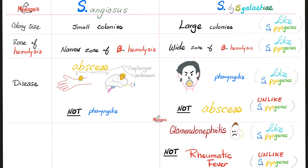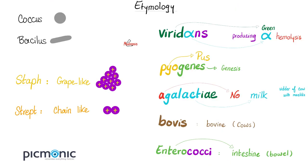Why do we call it angiosus? The word 'angio' means vessel. Why do we call it dysgalactiae? 'Dys' means difficulty, 'galactiae' comes from galactose, lactose, milk — because these organisms were first discovered to cause cow mastitis. They affect the udder of the cow, making the cow less able to produce milk.